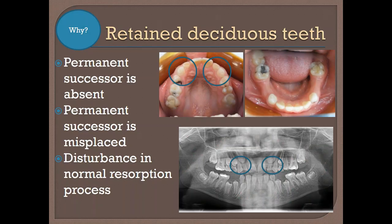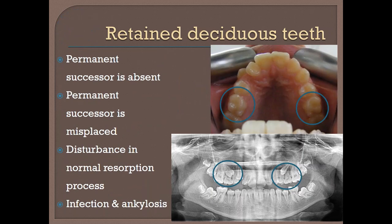Etiological reasons for retained teeth include the permanent successor being absent, hypodontia, or the permanent successor being misplaced. For example, this young lady aged 12 to 13 had a retained E. All teeth were present 6 to 6 occlusally except for the upper second premolars. The permanent second premolar deflected from its normal path of eruption, preventing proper root resorption, resulting in retained deciduous teeth.